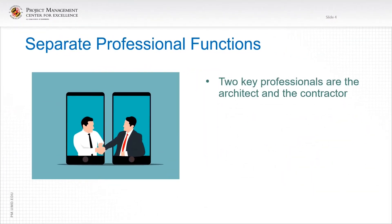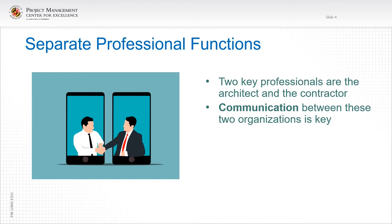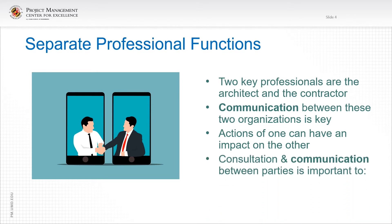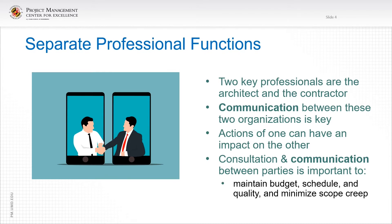The next item we're covering is the separate professional functions of the architect and the contractor. On all projects, we have architect-engineers and the contractor, but depending on their relationships, that will determine the project delivery method. Communication between these two organizations — the A&E and the contractor — is key. Actions of one can have an impact on the other. Consultation and communication between the parties is important to maintain a good budget, a good schedule, great quality, and minimize scope creep.